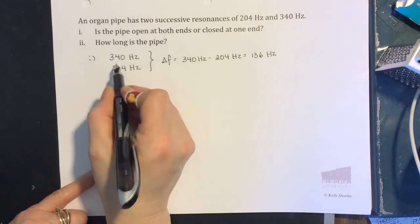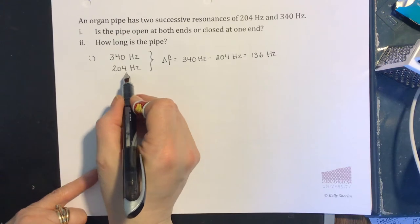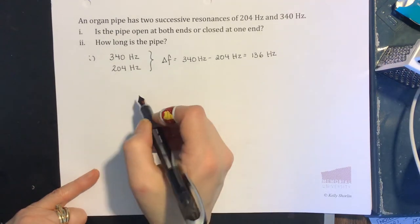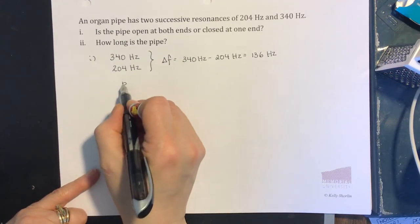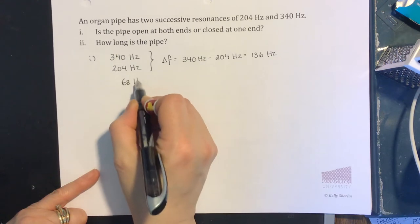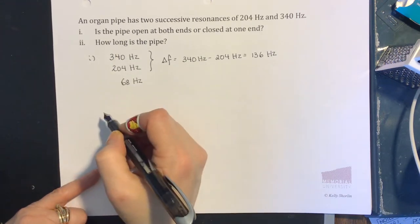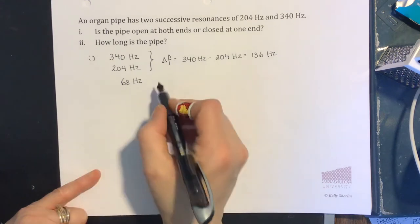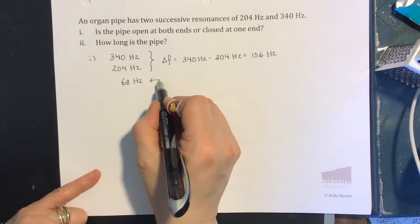That means our next lower frequency is 204 subtract 136, so our next lower frequency is 68 hertz. This frequency is as low as we can get. Frequencies aren't negative, so this is the smallest frequency. Therefore, this is the fundamental.